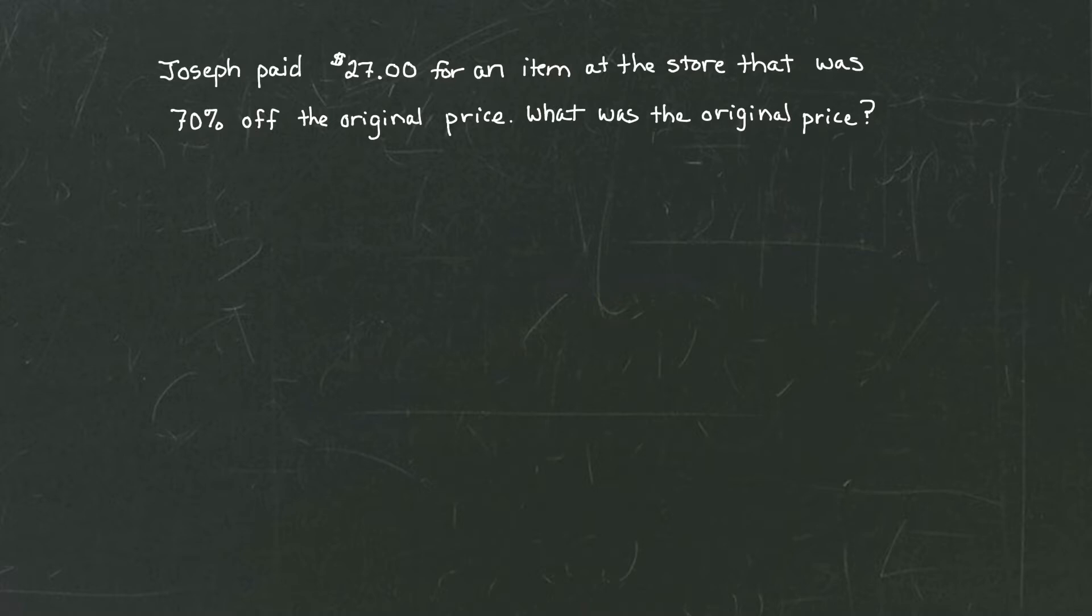So this is a typical discount kind of problem. Except normally what happens is we have an object, we have the price of that object, and then we have the discount percentage, and then we're asked to find what the sale price is. But in this case, we're told what the sale price is, we just don't know what the original price is.